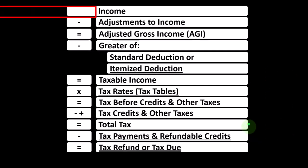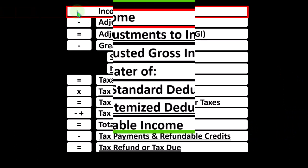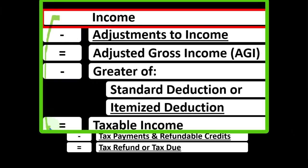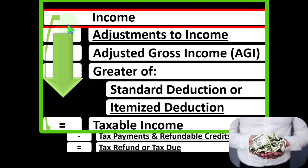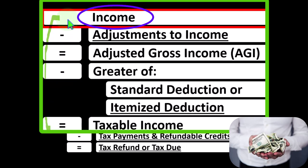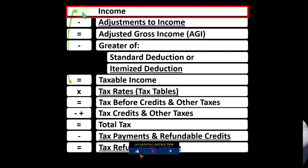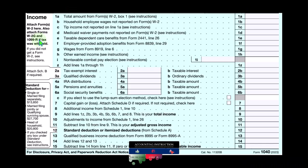Looking at the income tax formula, we're focused on line one income. In the first half of the income tax formula, it's basically a funny income statement. Normally, income statements have income minus expenses resulting in net income. Here we have income minus various deductions resulting in taxable income. With the income line item for taxes, we want it as low as possible, therefore looking for things that we might be able to exclude from income. Some income line items might be taxed at more favorable rates other than ordinary income, examples possibly being qualified dividends and long-term capital gains.